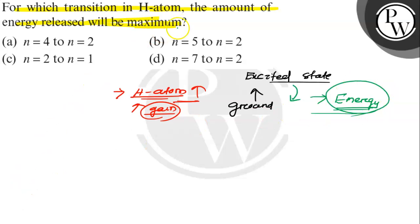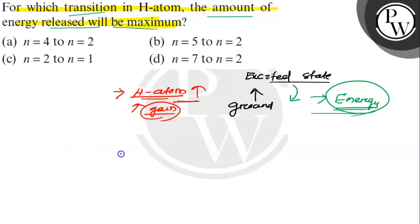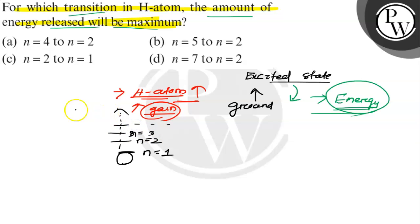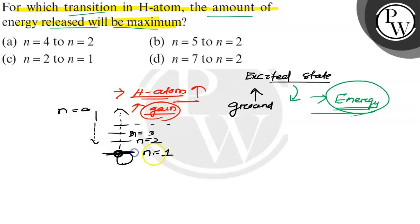So the question is asking: in which transition will the energy released be maximum? In the case of the hydrogen atom, the ground state is the energy level n=1. It can jump to different energy levels: n=2, n=3, n=4, up to n=infinity. From infinity, it jumps back to the ground state n=1.